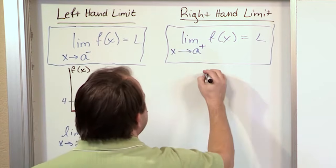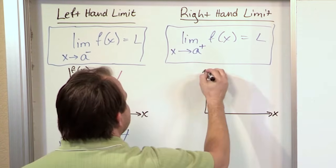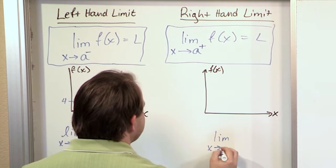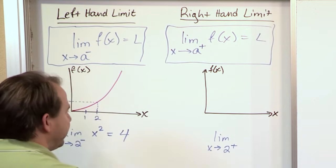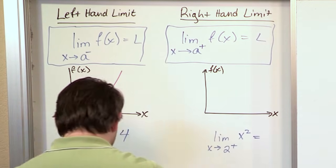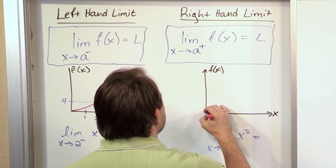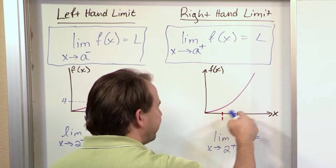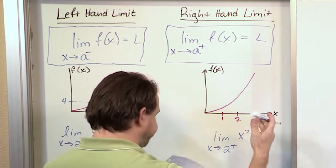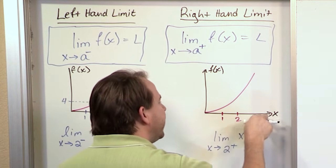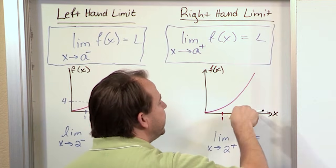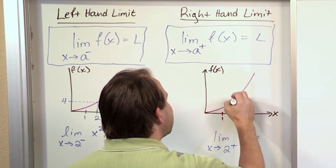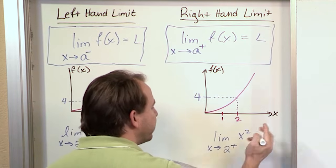Now let's draw a picture of the right-hand limit. If I'm trying to find the limit as x approaches 2 from the right — that's what the plus means — of x squared, the x squared curve is a parabola. Here's 1, here's 2. But now I'm coming from the right-hand side, so I might start at 4, then 3, 2.5, 2.1, 2.00001, and eventually I get really, really close and I'll see from my table that I'm also approaching a value of 4, because 2 squared is 4.